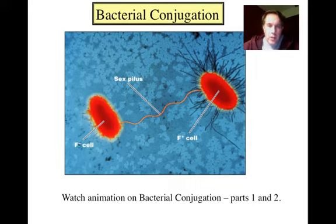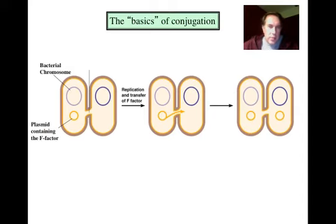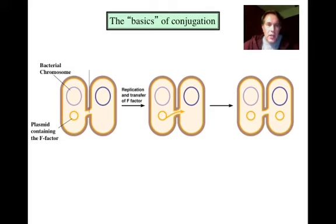Now that you've watched parts one and two of bacterial conjugation, let's highlight the salient points. We have the bacterial chromosome shown in purple on the left, and also a plasmid containing what's known as the F-factor — the fertility factor. The F-factor is a series of genes that code for production of the conjugation tube connecting the two cells, as well as genes responsible for replication and transfer of the plasmid to the recipient cell. These are sometimes referred to as the tra genes, or transfer genes.